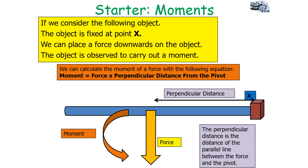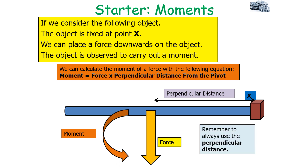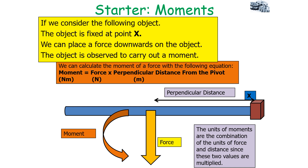Combining these two ideas, we can calculate the moment of a force: the moment equals the force multiplied by the perpendicular distance from the pivot. The perpendicular distance is the distance of the parallel line between the line of action of the force and the pivot. It's extremely important that you always use the perpendicular distance that the line of action is away from the pivot. The units of moments are a combination of force and distance, so while forces are measured in newtons and perpendicular distance in metres, the unit for moment is the newton metre.